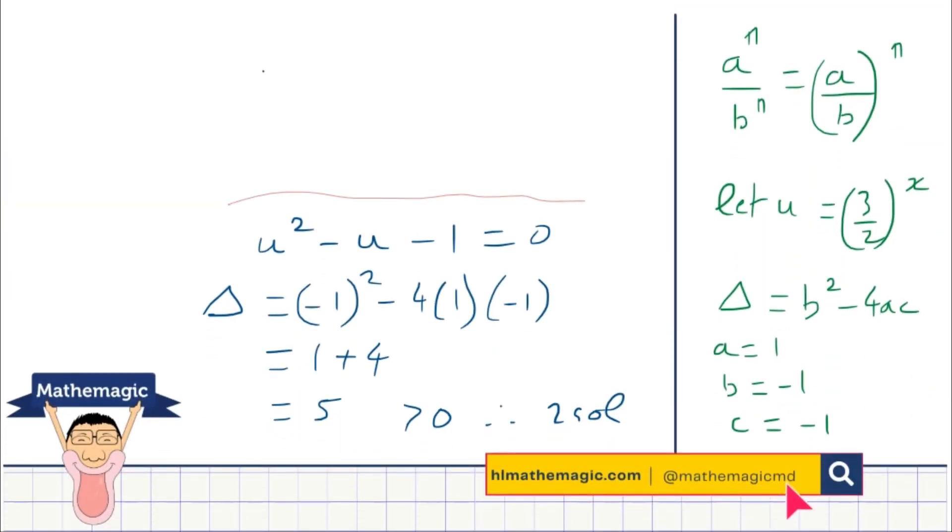Starting from the top with our quadratic, we can say that u1, u2, so our two solutions, are going to be minus b plus or minus the square root of delta over 2a. In this case, it'll be minus b, so minus minus 1 is 1, plus or minus the square root of 5 over 2a, which is 2.